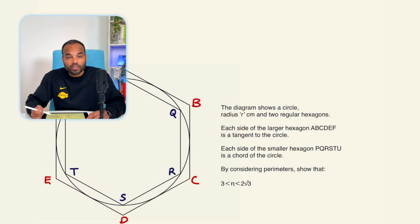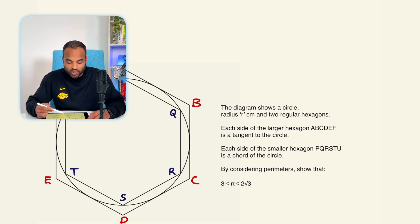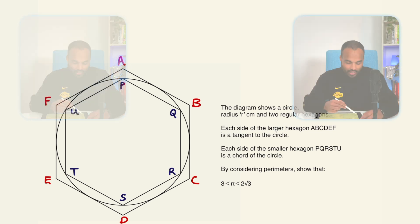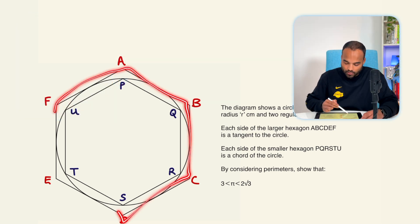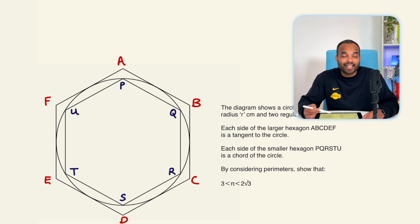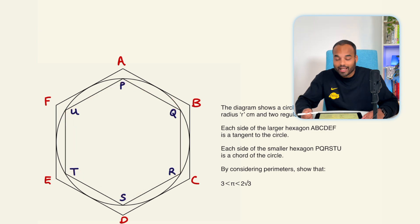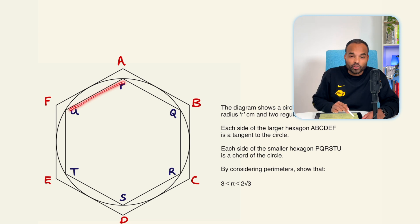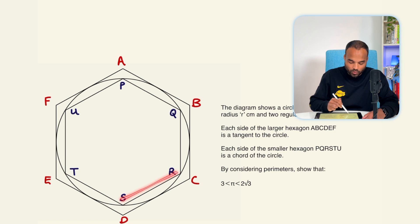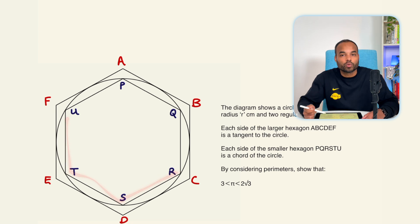The diagram shows a circle of radius r centimeters and two regular hexagons. Each side of the larger, outer hexagon ABCDEF is a tangent to the circle, whereas each side of the inner hexagon PQRSTU is a chord of the circle. So PQ, QR, RS, ST, and TU are all chords of the circle.